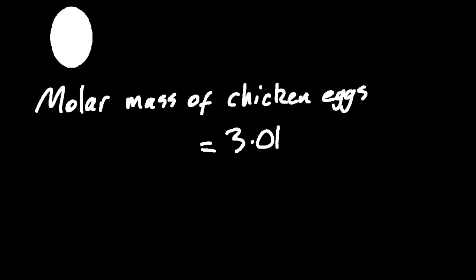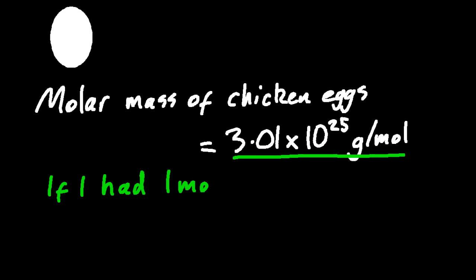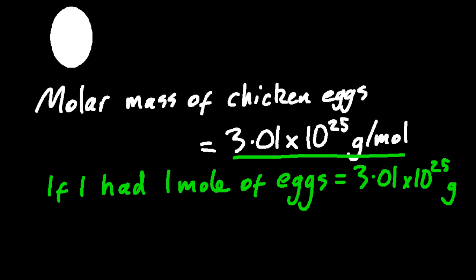But let's have a little think. The molar mass for, say, chicken eggs is 3.01 times 10 to the 25 grams per mole. So let's expand that. What does that mean? Well, that means that if I have one mole of chicken eggs, then the mass is going to be 3.01 times 10 to the 25 grams.